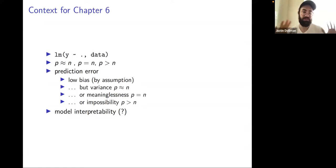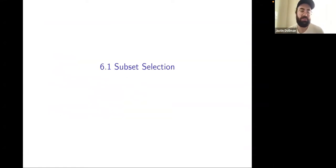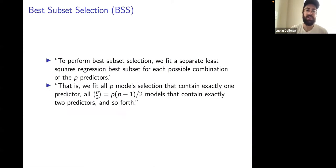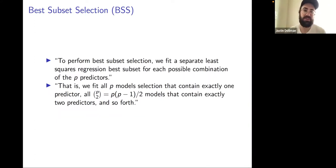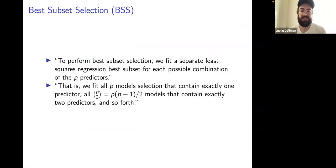Section 6.1 is about subset selection. In best subset selection, we fit separate least squares regressions for each possible combination of the P predictors. The general algorithm is: at the first step, P is the number of predictors, so we fit all P models containing exactly one predictor, then P-choose-2 models containing two predictors, and so forth.